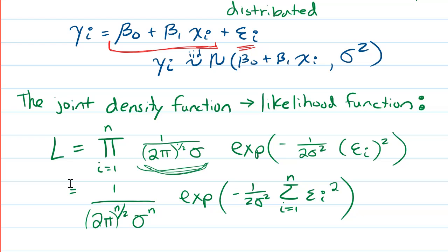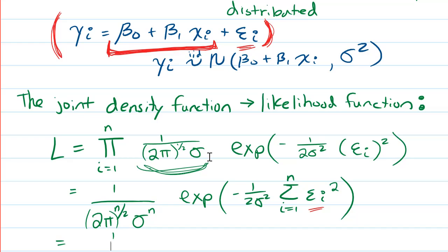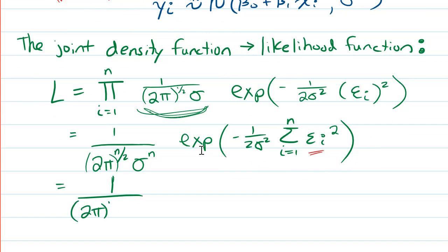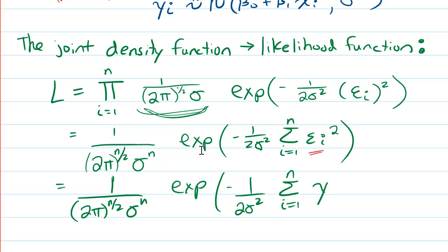So that's the maximum likelihood function. I can now plug in what εᵢ is — from the simple linear regression equation, solving for εᵢ means subtracting β₀ + β₁xᵢ from both sides. This gives us L = 1 over (2π)^(n/2) times σⁿ, times exp of negative 1 over 2σ² times the sum from i = 1 to n of (yᵢ − β₀ − β₁xᵢ)².